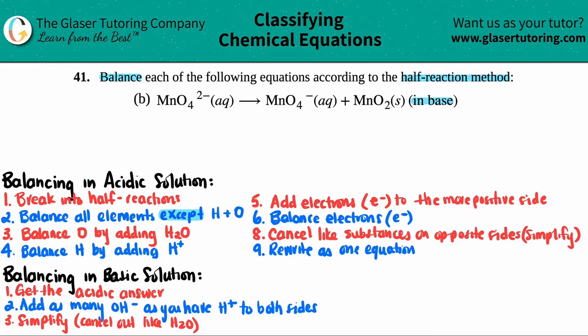For balancing in basic solutions, the first thing we have to do is get the acidic answer. The acidic answer is the problem — it has the bulk of the steps. Once you get your acidic answer, all you have to do is add a couple of things and you get your basic answer. So just make sure that you know your acidic solution and all the steps, but we're going to do it together.